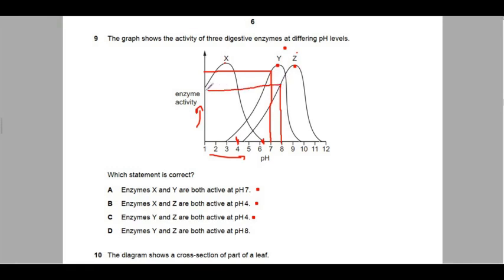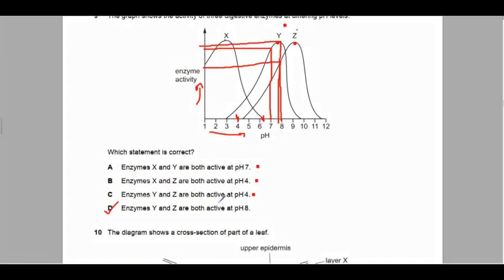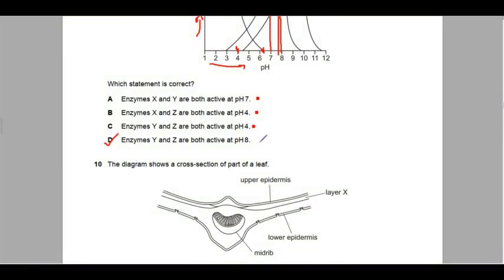So should be left with D: enzyme Y and Z are both active at pH 8. pH 8, you've got activity there for Z, correct. Again, if we go from pH 8, we've got an activity there for Y, correct. So our answer is D. Okay, I don't know why we're getting D as the answer all the time. Anyway, this answer is correct.